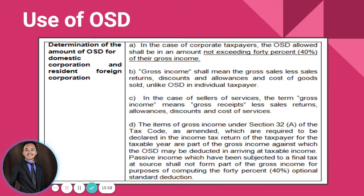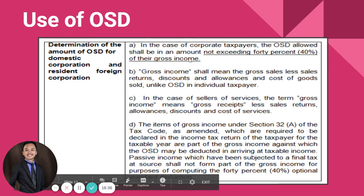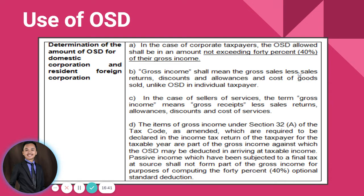What if the corporate taxpayer opts to use optional standard deduction? There is a key difference: for an individual taxpayer, OSD is 40 percent based on gross sales. However, for a corporate taxpayer, the OSD allowed shall not exceed 40 percent of gross income, where gross income means gross sales less sales returns, discounts, allowances, and cost of goods sold. So the 40 percent is applied to gross income, not gross sales.